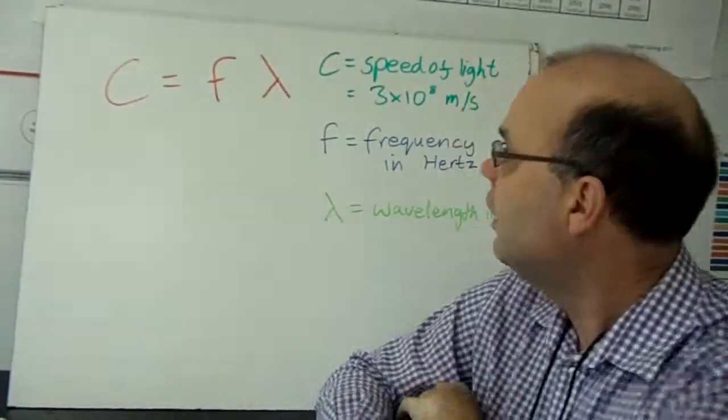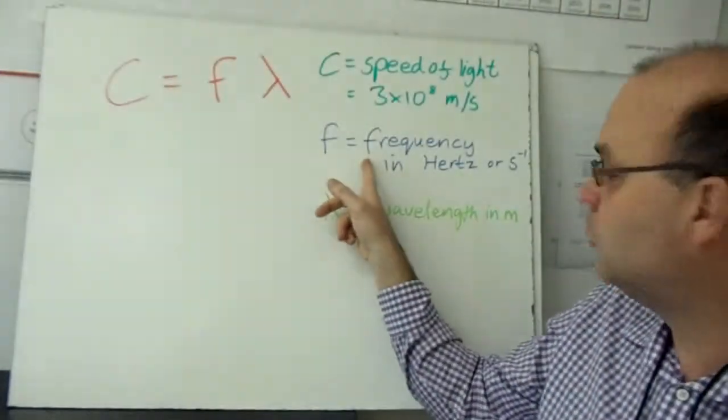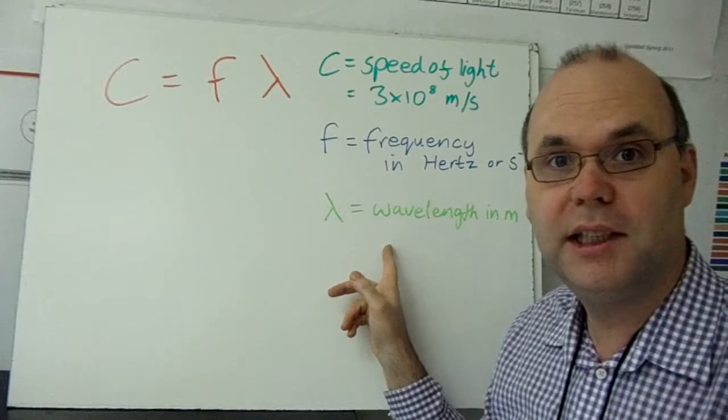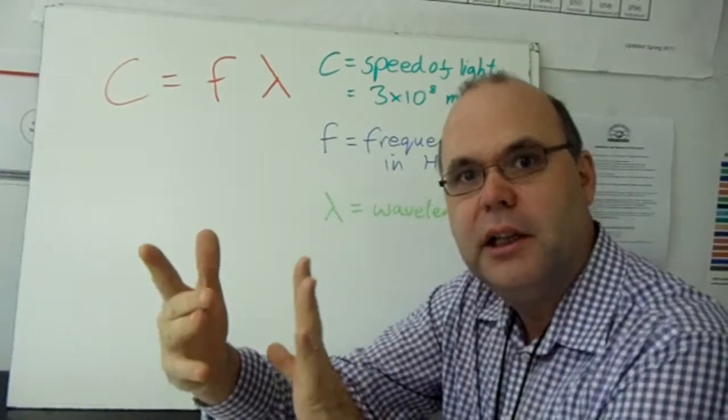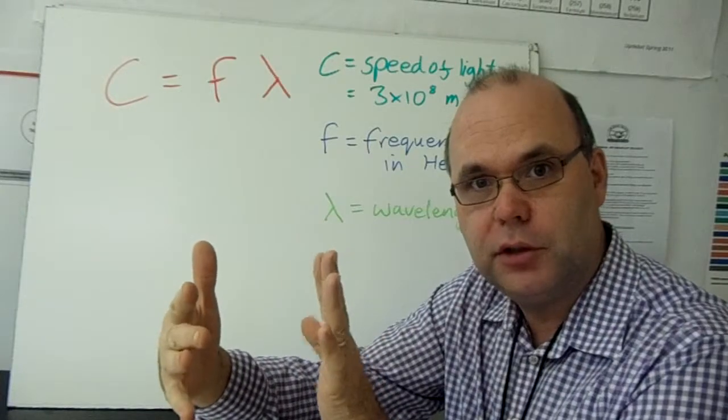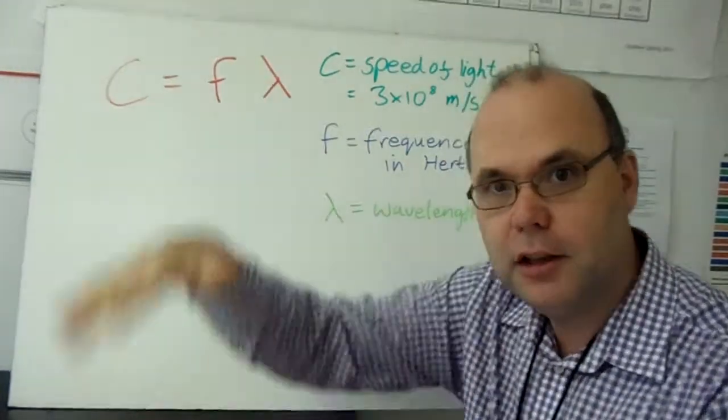Last time we looked at how the frequency of a wave and a wavelength were related. We said if you've got a short wavelength, then lots of waves can go past in one second, so you get a high frequency.